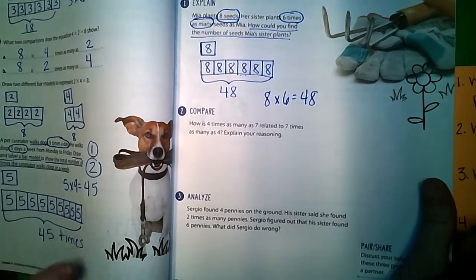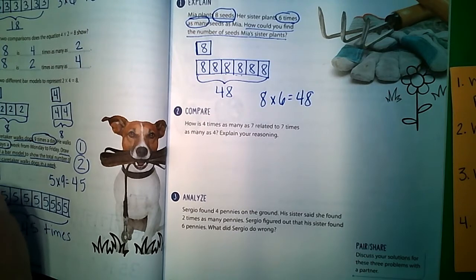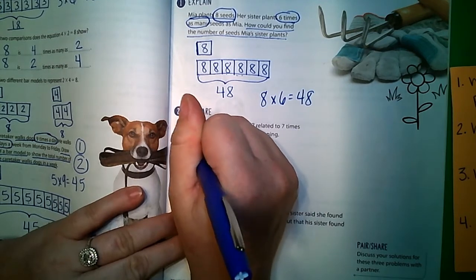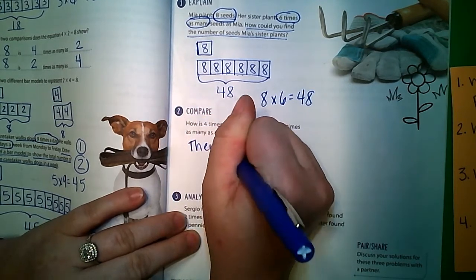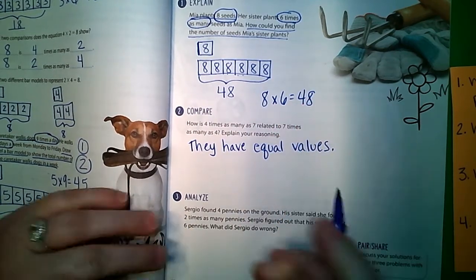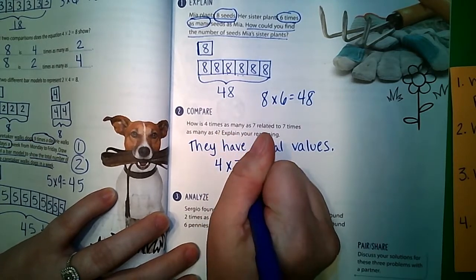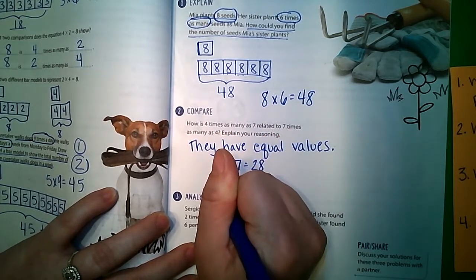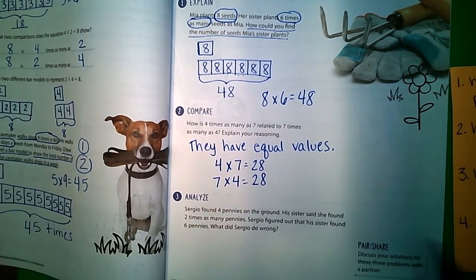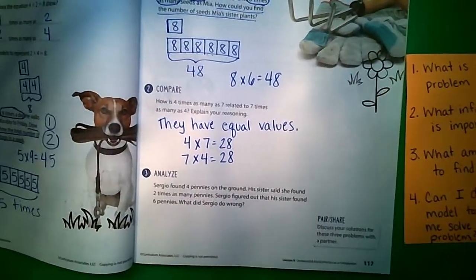Number two: how is four times as many as seven related to seven times as many as four? Well, they have equal values. This is where that commutative property of multiplication comes in. So four times seven equals 28, but also seven times four equals 28. You can reverse those two numbers and you're still going to get the same answer.